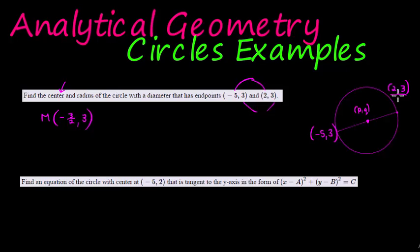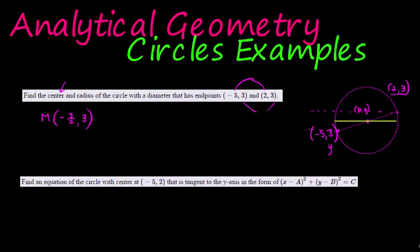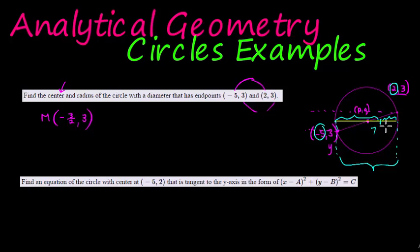Interestingly, these two points are perfectly horizontal because their y-values are the same. If they have the same y-value, they must lie on a horizontal line. This makes the distance very easy to determine: from negative five to positive two, that's five units to zero and two more units to two — a total distance of seven. So the diameter is seven.